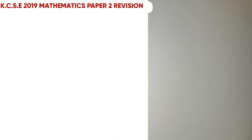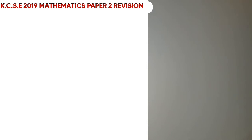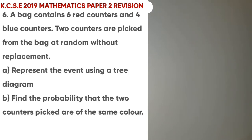Welcome viewers to our channel. In our last clip we have been revising KCSE Mathematics Paper 2 2019, and we stopped at question 5. In this clip we're going to start from question 6: a bag contains six red balls and four blue counters, and two counters are picked from the bag at random without replacement.